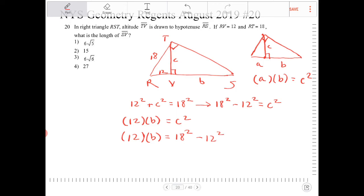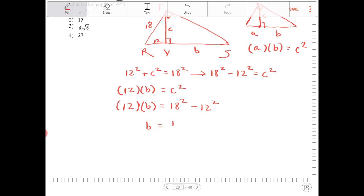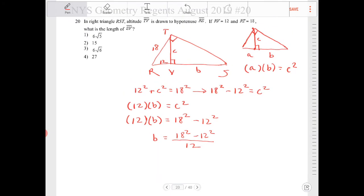And now I can solve for B. B is equal to 18 squared minus 12 squared all over 12. And I can just enter that into the calculator and I can call it a day. So let's do that. 18 squared minus 12 squared.